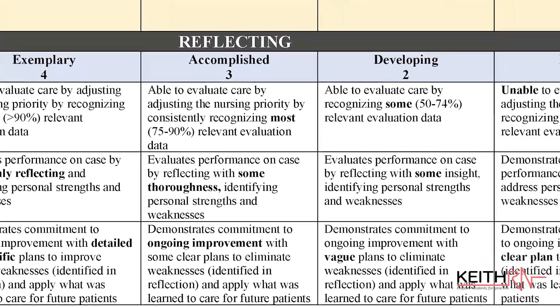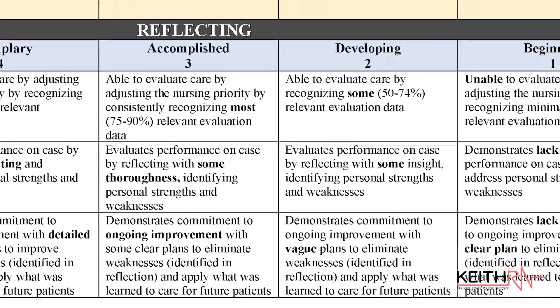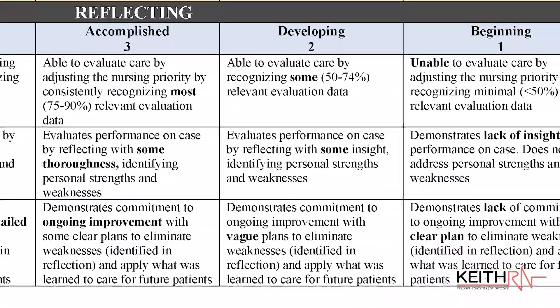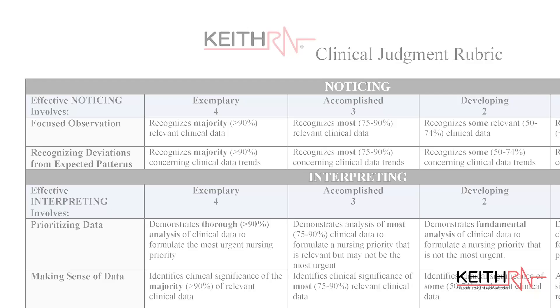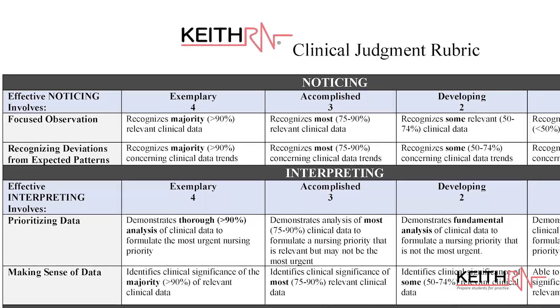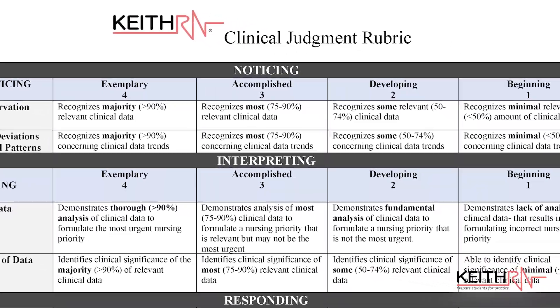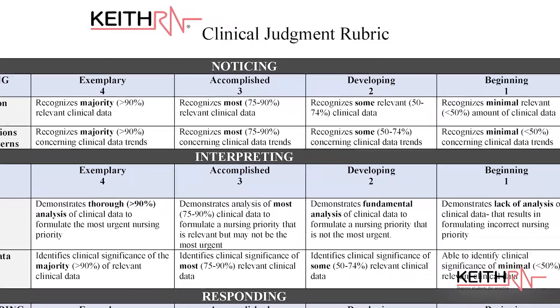Just as Lasseter's Clinical Judgment Rubric breaks down the four clinical reasoning processes of Tanner's Clinical Judgment Model into 11 observable clinical judgment skills with four levels of proficiency, so does the KeithRN Clinical Judgment Rubric. Each of the 11 clinical judgment skills is scored one to four based on the level of proficiency.